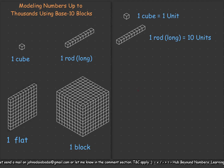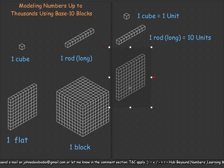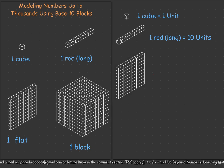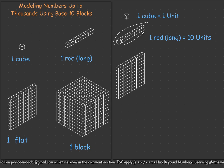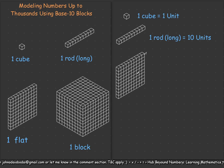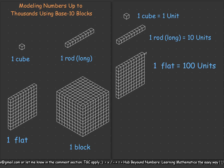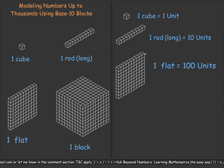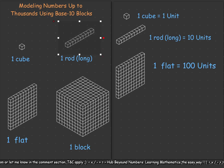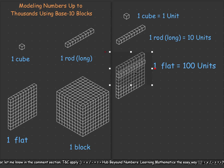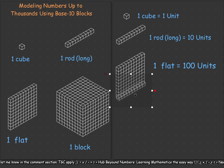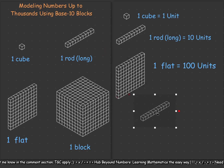Then we come to a flat. A flat is made up of 10 longs. So 10 cubes form one rod, and 10 rods form one flat. We have 10 rods in one flat. Taking a rod and doing the comparison you can see: one, two, three, four, five, six, seven, eight, nine, ten — so 10 rods make up one flat.